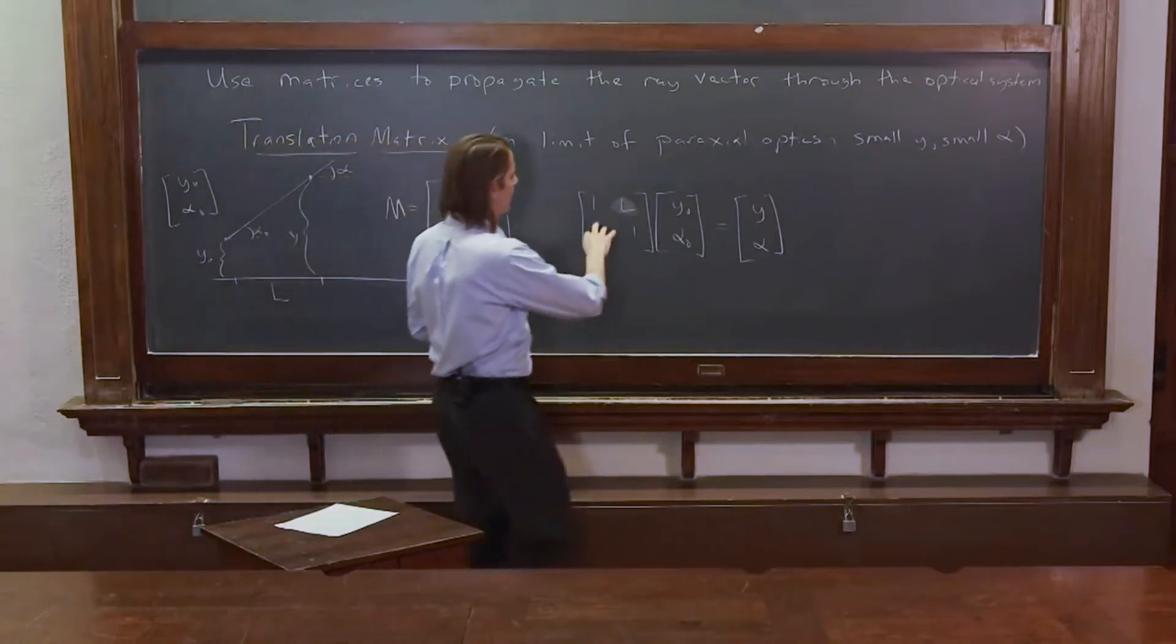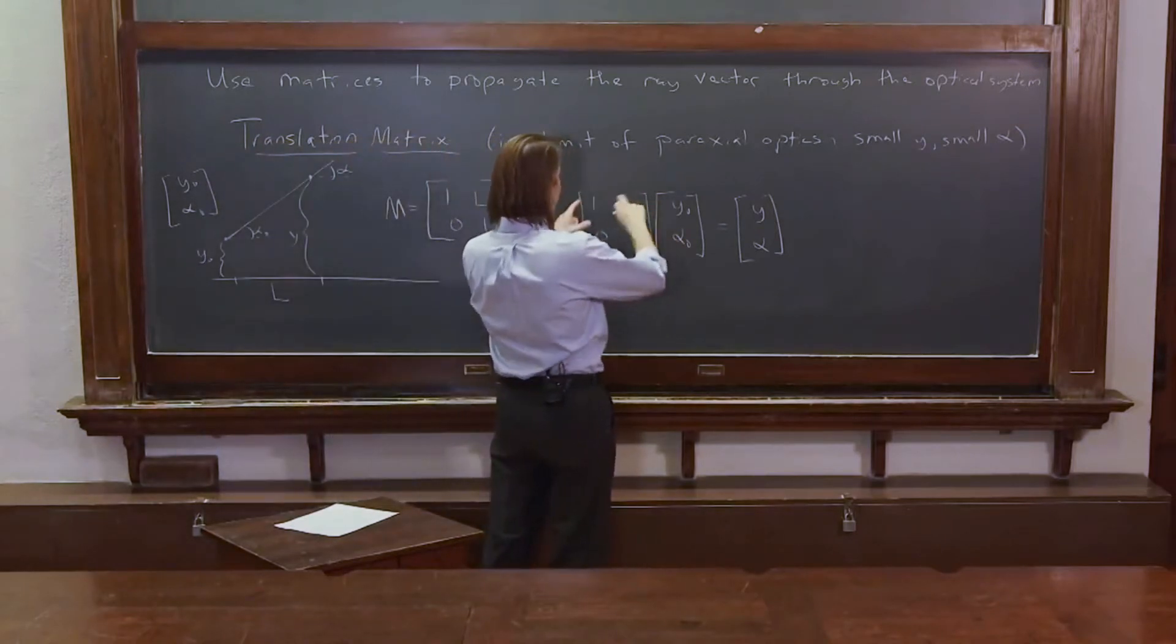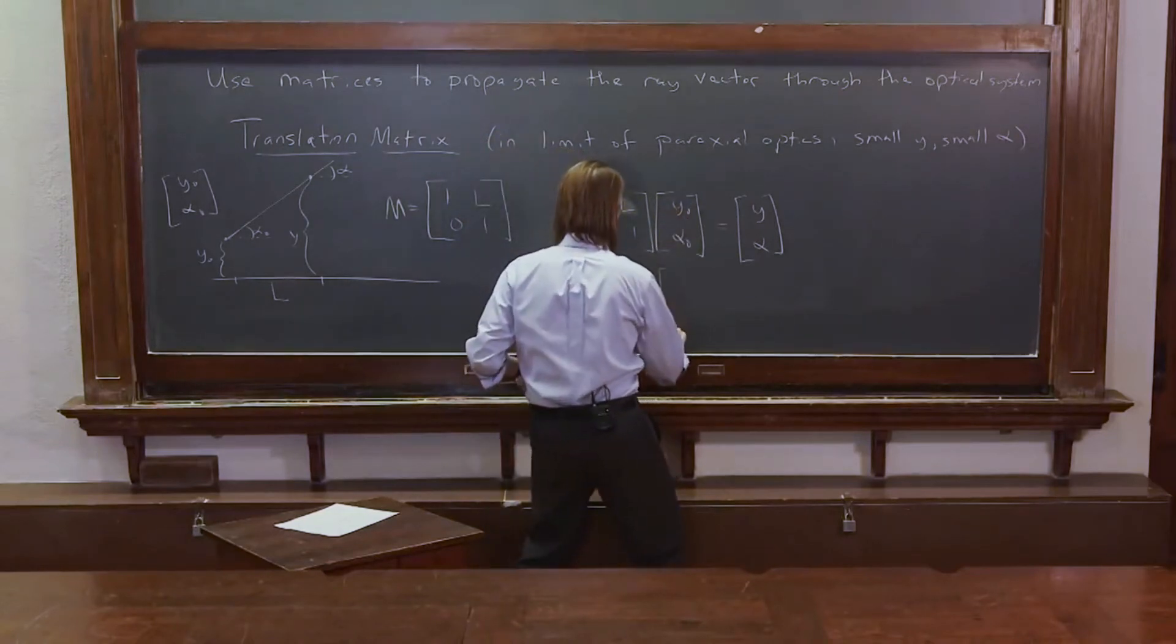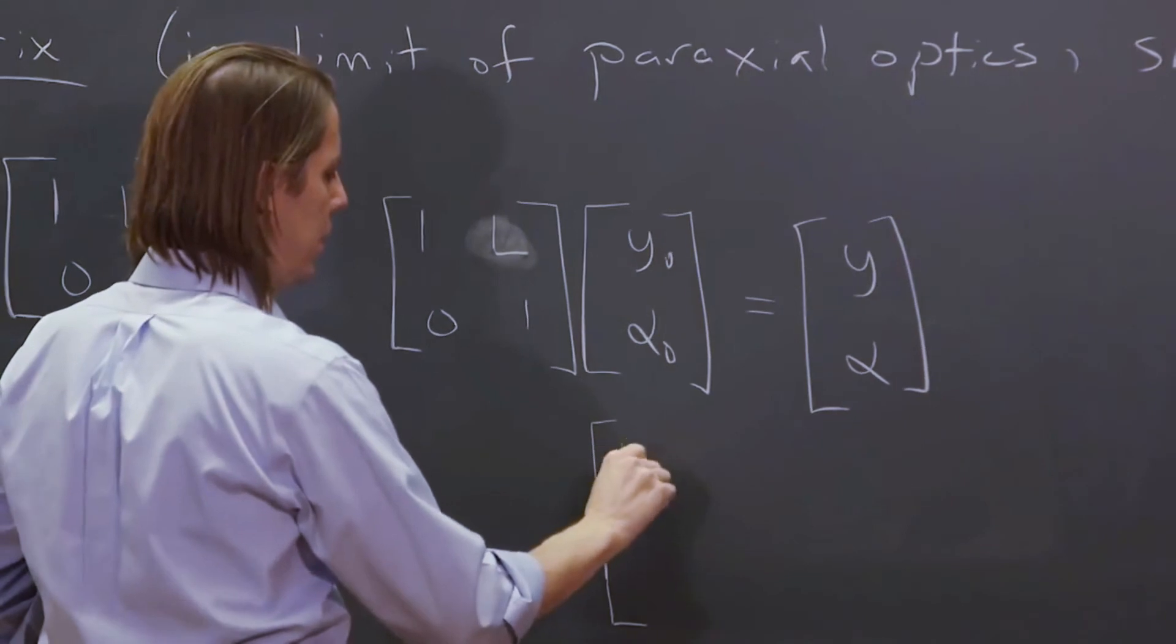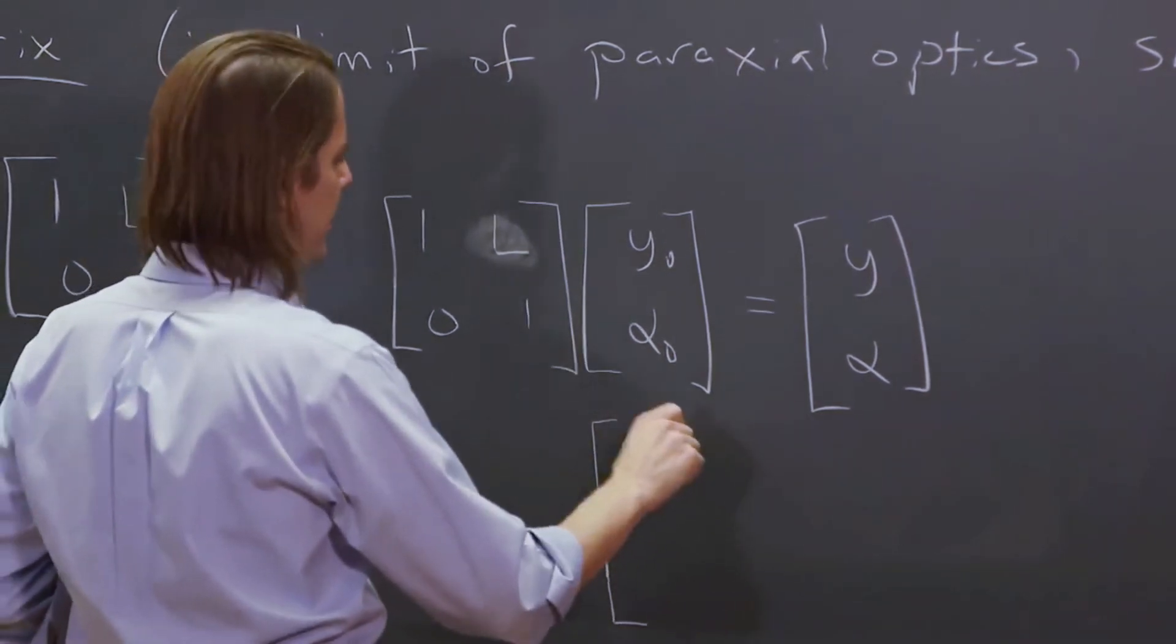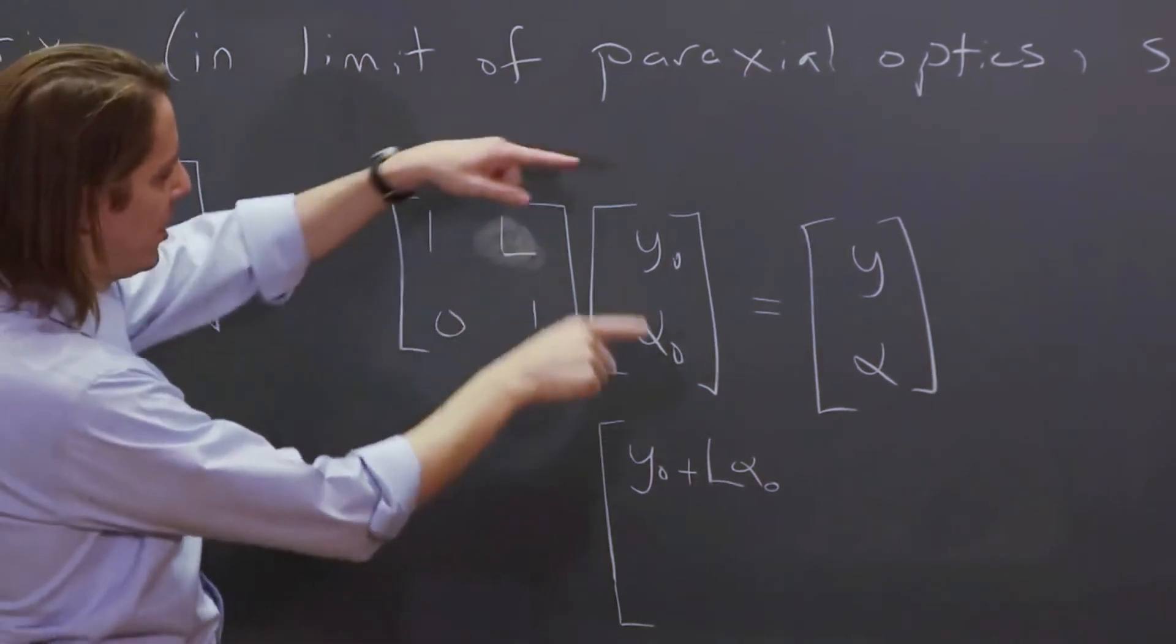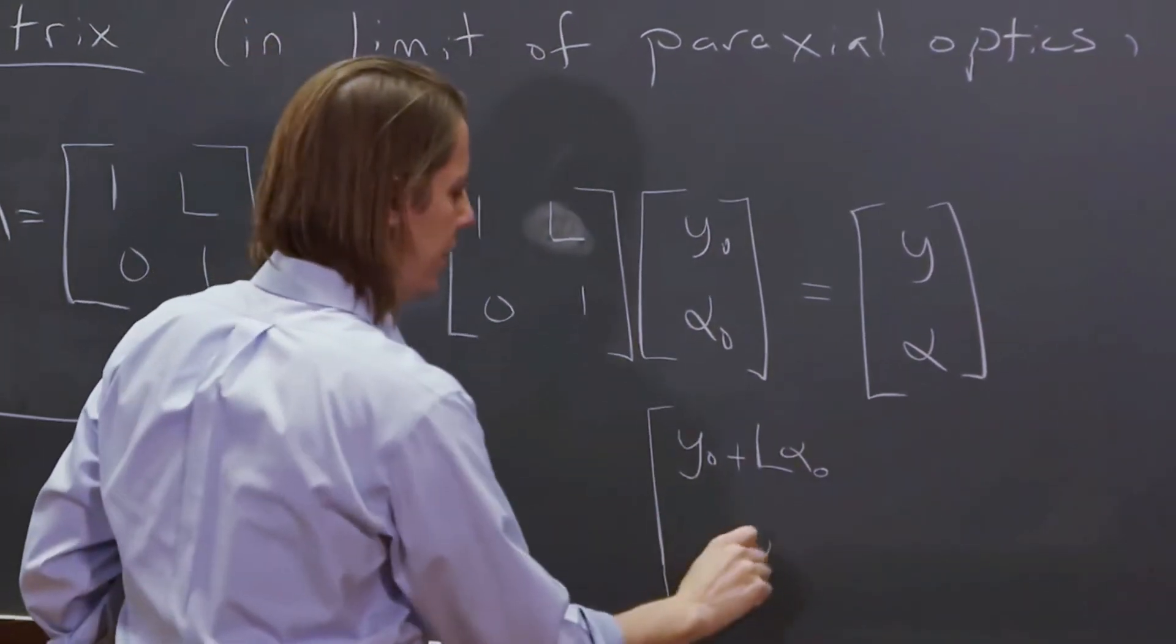The new y and alpha. And we can multiply it real quick and see if that's the case. So you got to remember how to multiply matrices. This is 1 times y naught plus L times alpha naught ends up in the top. So that's y naught plus L times alpha naught. And then in the bottom, you have 0 plus 1 times alpha naught.